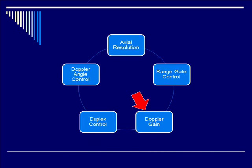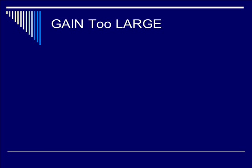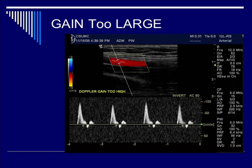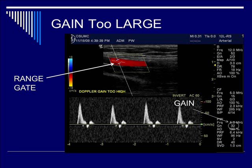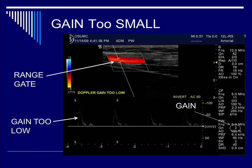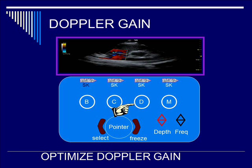Now let's move on to Doppler gain control. What happens when the gain is too large? As you can tell from this brachial artery example, there's a lot of background noise when the gain is too excessive, as well as some degree of spectral broadening. In this case, the gain is over 30, which is too large, and it leads to excess gain that makes interpretation of the 1D spectra less secure. What happens if the gain is too small? In this case, the gain is only 2, and the signal intensity is hard to read. That is also non-optimal. So by rotating knob D, you can optimize the gain.